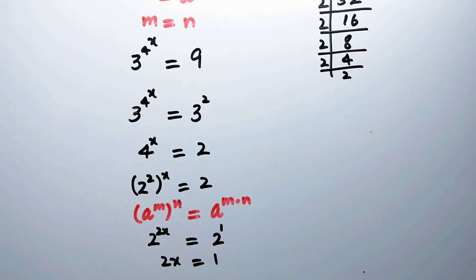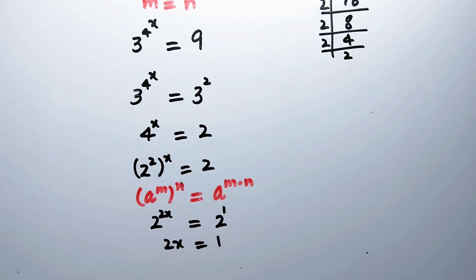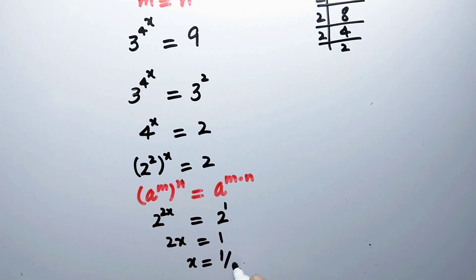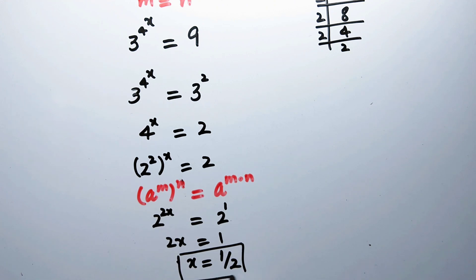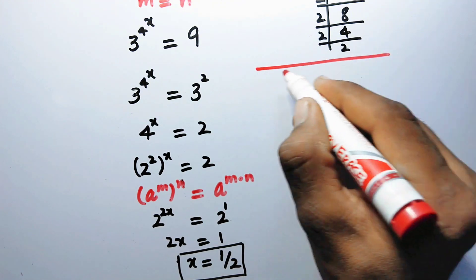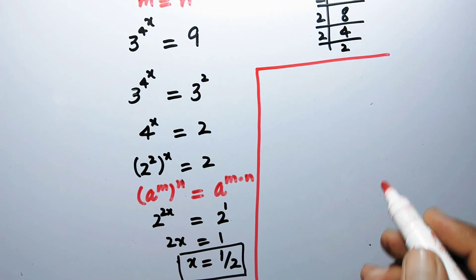Since the bases are the same, by comparing we get 2x equal to 1, and therefore x is equal to 1 over 2. That is our final answer. Now let's verify our answer.